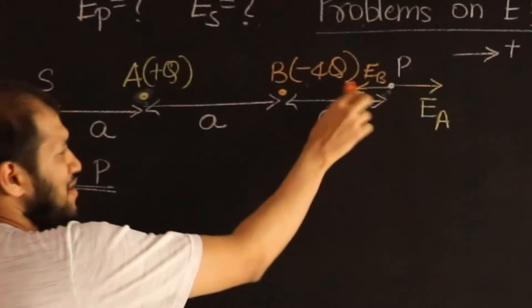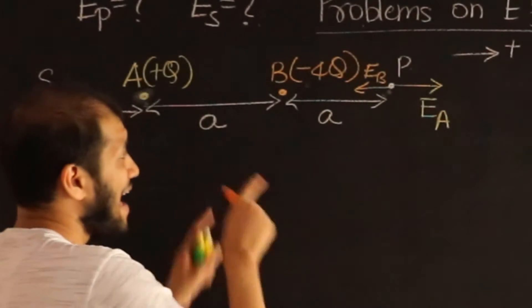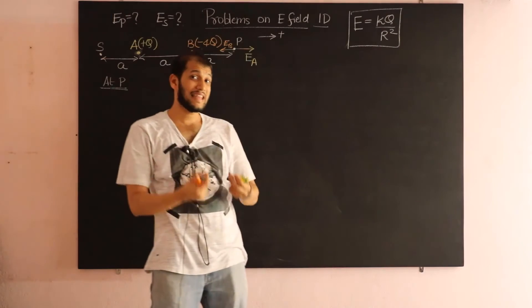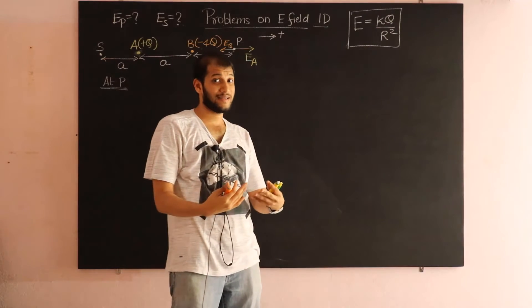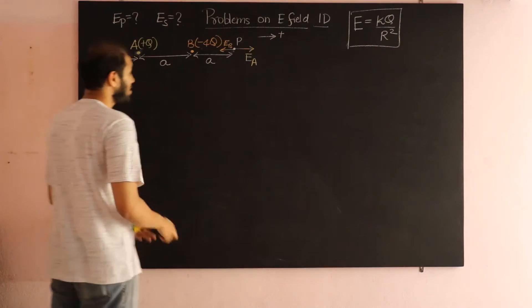And according to my sign convention, E_B will have a negative value. So I'm going to substitute the negative sign only while adding them. So let me first calculate the magnitude.